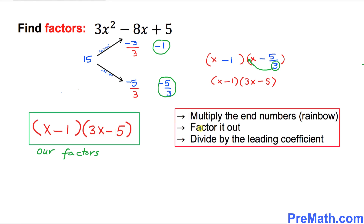Let's recap all the steps. The very first step was to multiply the end numbers — we created a rainbow. Then whatever number we got, we factored it out. The final step was to divide those numbers by the leading coefficient.